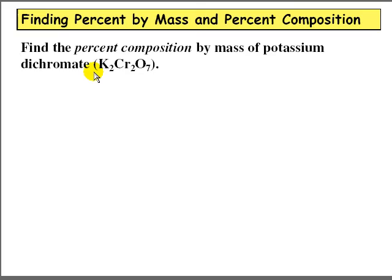This is a little example of how we find percent composition, or the percent mass of each element in a compound. Let's say we have to find the percent composition of potassium dichromate.